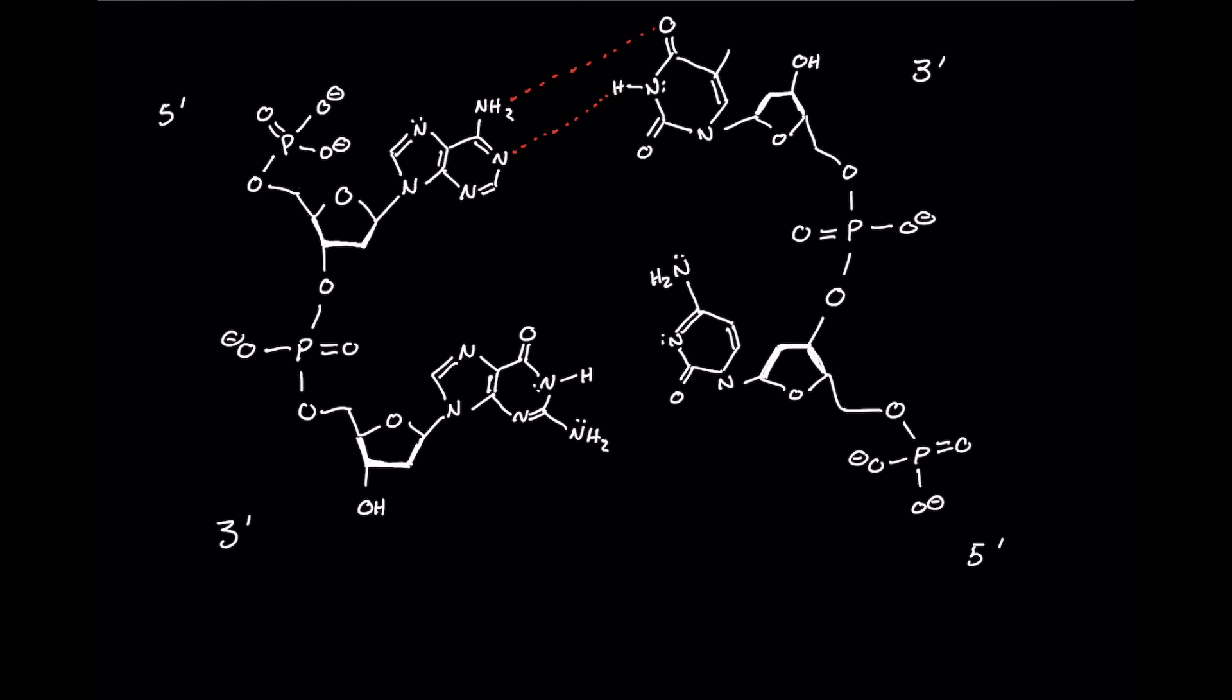Now we also know that cytosine and guanine are going to have three hydrogen bonds between them. What we need to do is figure out where those are. This amine is going to contribute a donor hydrogen and coordinate with the lone pair on this carbonyl oxygen. So we're going to look at something like this. Our next hydrogen bond will be between this donor hydrogen and the lone pair on this nitrogen. So we'll look at this here for our next hydrogen bond. And then finally we'll take a look at this hydrogen on the free amine and the lone pair on this oxygen which will create our final third hydrogen bond between our nitrogenous bases guanine and cytosine.